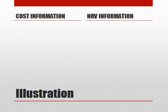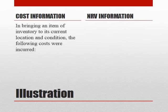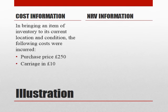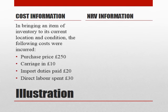So let's have a look at an example. First of all, we'll start by considering the information that we have on a particular item of inventory with regards to its cost. We've incurred a purchase price of £250, carriage in of £10 — the cost of getting the item to its present location — import duties of £20, and direct labour of £30. So those are all our costs.